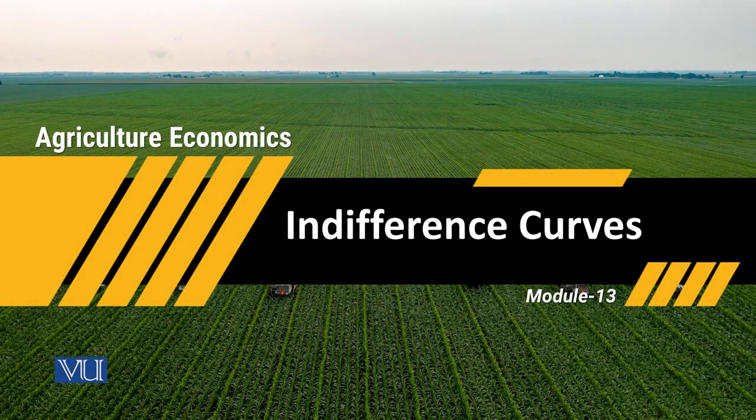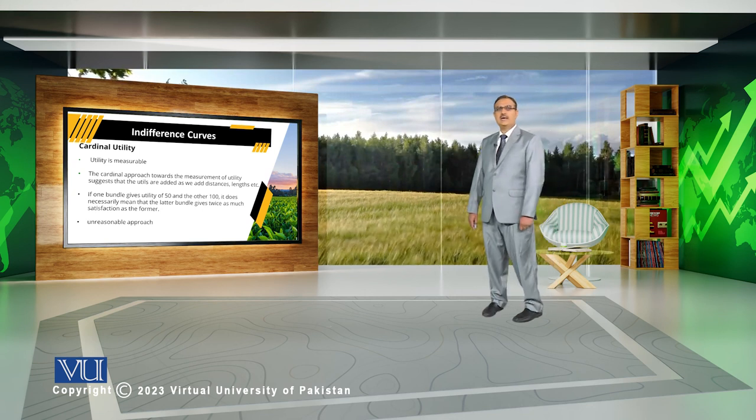Module 13: Indifference curves. We measure utility under the cardinal approach and the ordinal approach. The cardinal approach is a way where we can measure utility. Under the cardinal approach, we assume that the utility someone is getting from a particular commodity is independent from the quantities of other commodities.